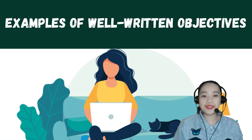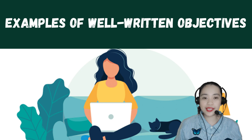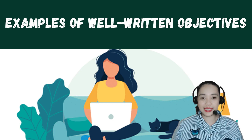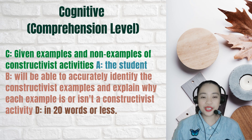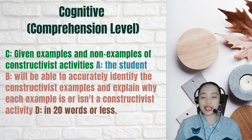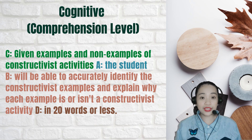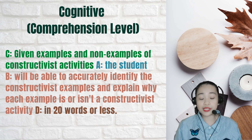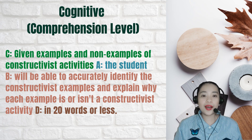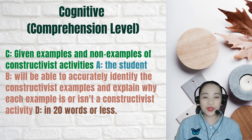Here are more examples of well-written objectives that include actor, behavior, condition, and degree of mastery. Remember that many objectives put the condition first. Cognitive — comprehension level: Condition: given examples and non-examples of constructivist activities; Actor: the student; Behavior: will be able to accurately identify the constructivist examples and explain why each example is or isn't a constructivist activity; Degree: in 20 words or less.